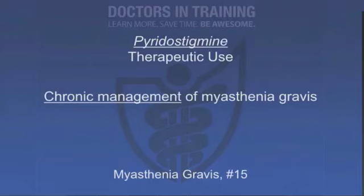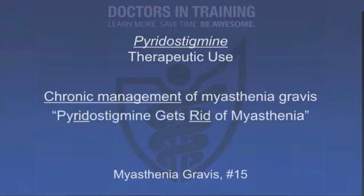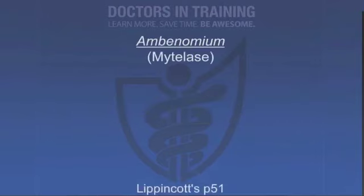For chronic management of myasthenia gravis, we use longer-acting cholinesterase inhibitors. Pyridostigmine lasts three to six hours and is the main drug for chronic myasthenia management. Ambinomium is even longer-acting at four to eight hours. Both drugs have cholinergic side effects similar to neostigmine.